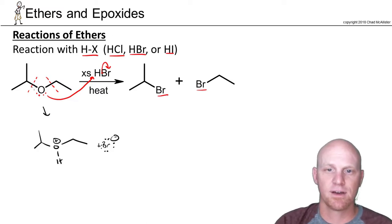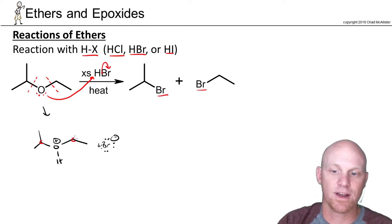if this is a tertiary carbon or a secondary carbon it'll go SN1. If it's a primary or methyl carbon it'll go SN2 and we're referring to this carbon right here and this carbon right here. So we've now got a good leaving group.